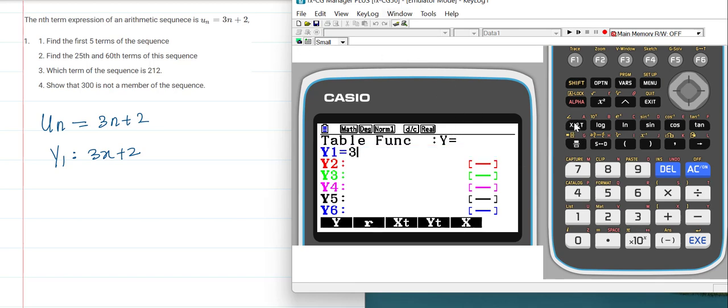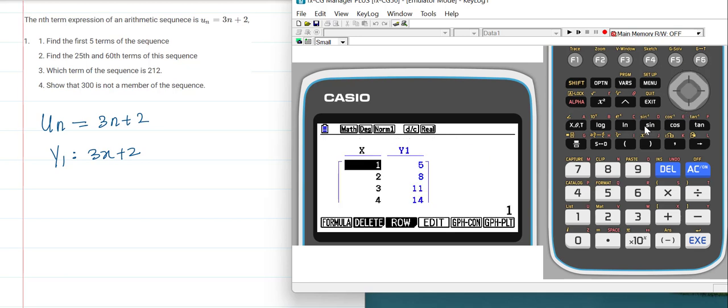So 3 times x plus 2. Hit Enter and press F6 to generate table. If you generate table, you can see first term is 5, second term is 8, third is 11, fourth term is 14, and the fifth term is 17.